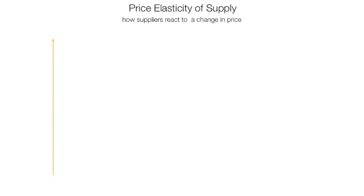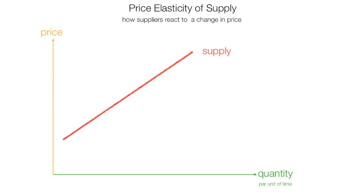Along the vertical axis is price. Along the horizontal axis, quantity per unit of time is plotted. We have the standard supply curve. At each point on the supply curve, there is a price and associated quantity.